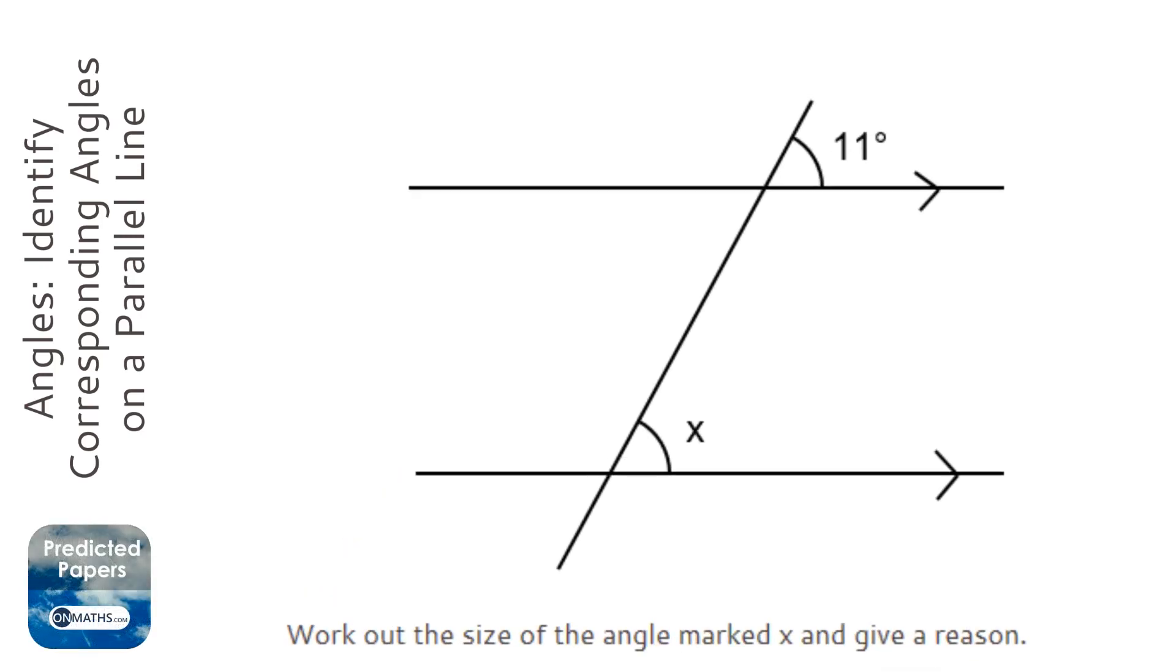So we've got two parallel lines. We've got one parallel line here and another parallel line here. And we've got two angles on this parallel line.